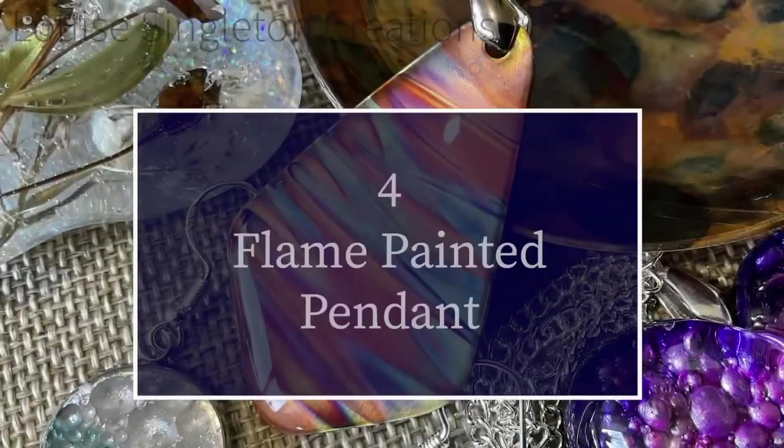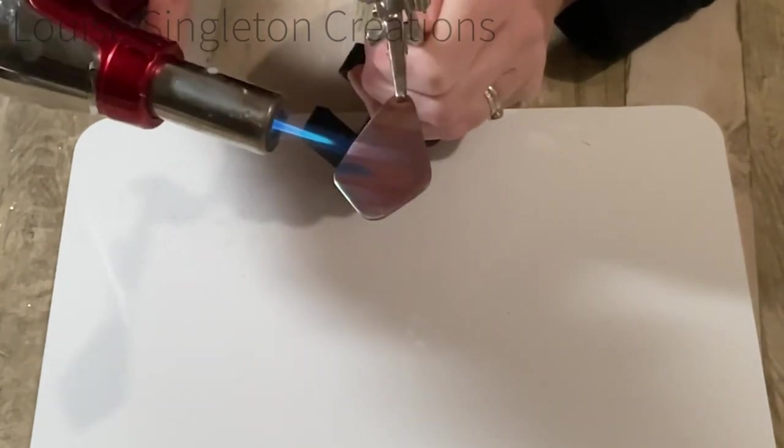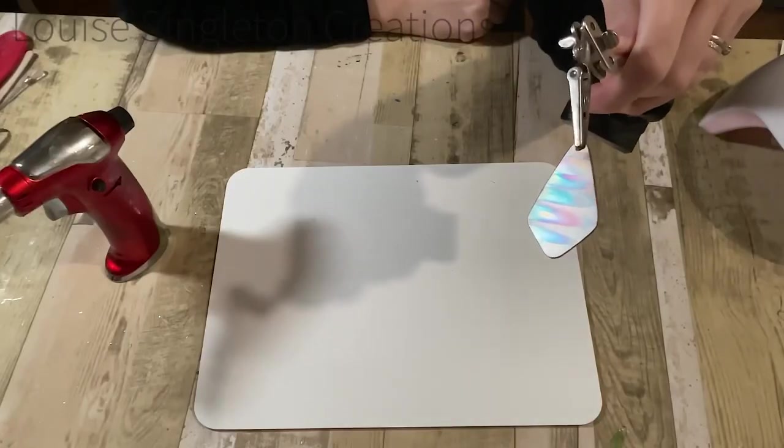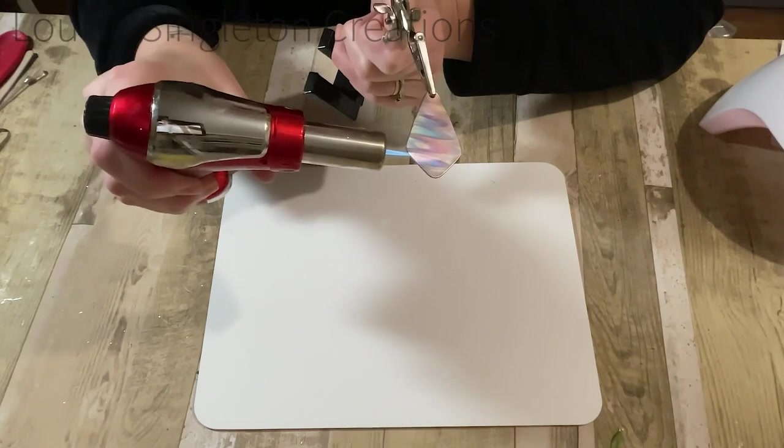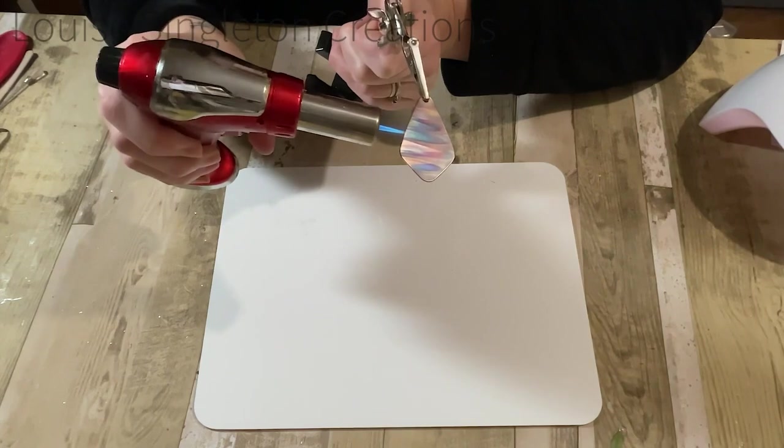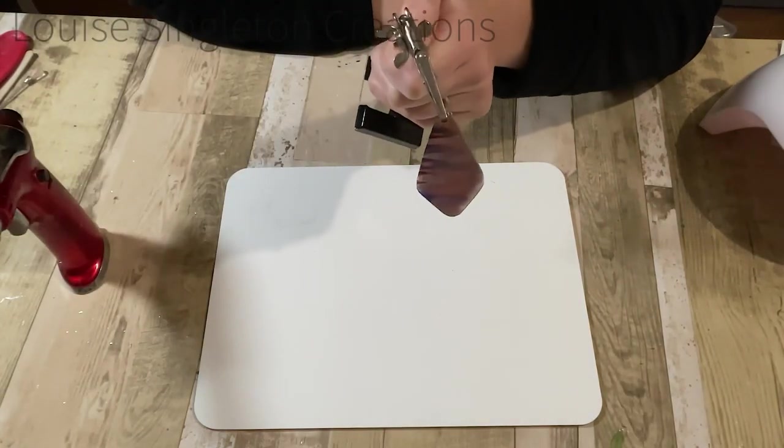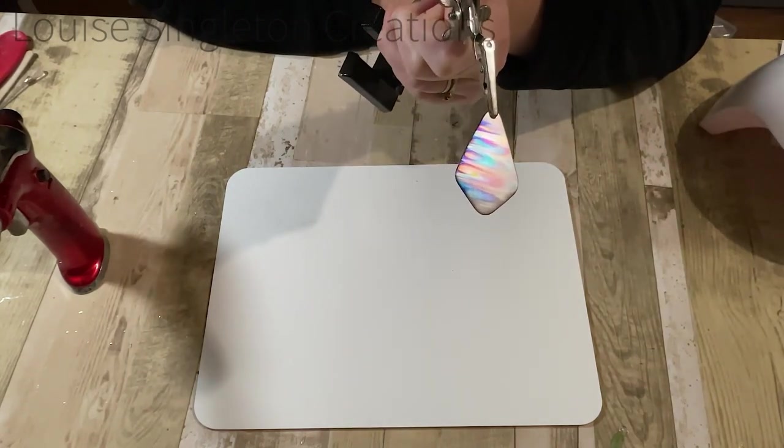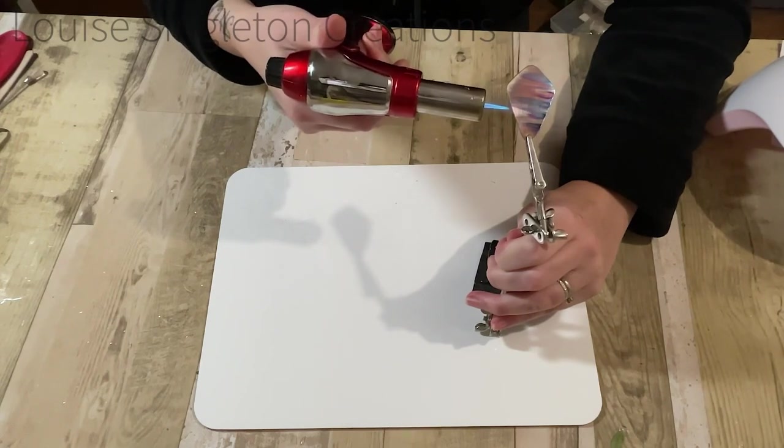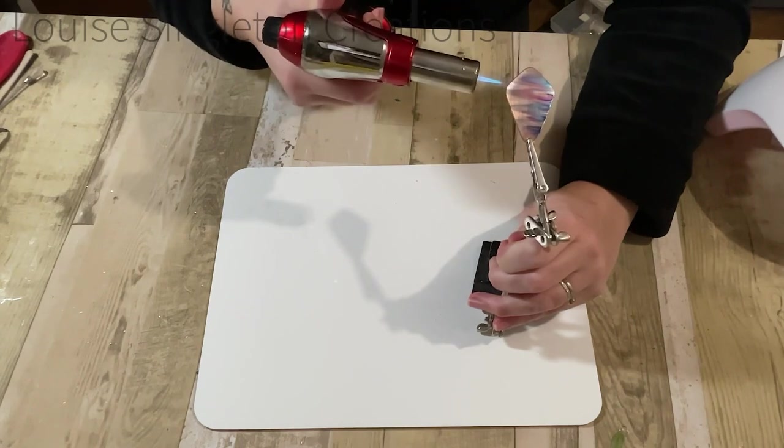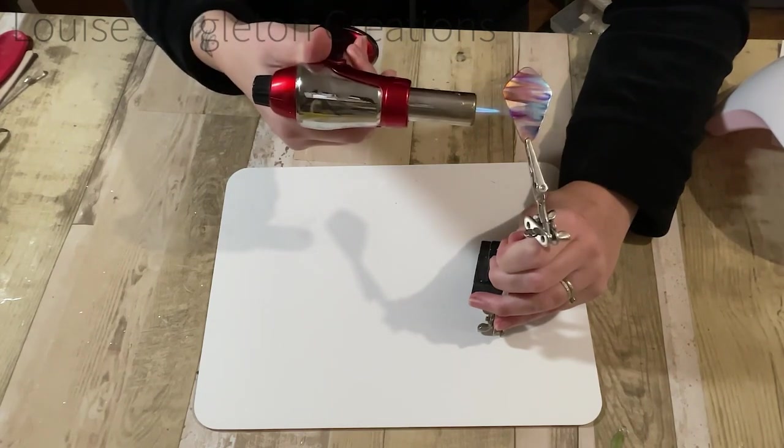Number four: flame painted pendant. I'm fairly new to flame painting but from what I have done I've absolutely loved it. What I have here is a copper blank, just a blank pendant which you can buy. I had it in my supplies for enameling—years and years ago I had a go and bought loads of copper blanks, then went on to a different interest like I do, and all got put away. But I got them out again to find my copper blanks and started doing this because I think it's so good. All you need to do is use your kitchen torch over the copper and it will color it.